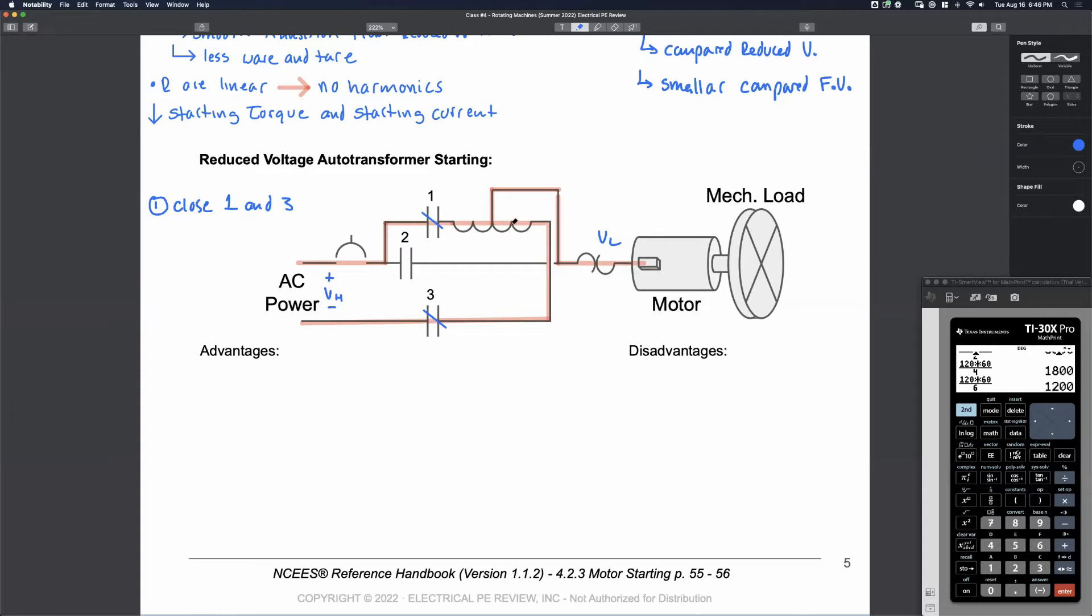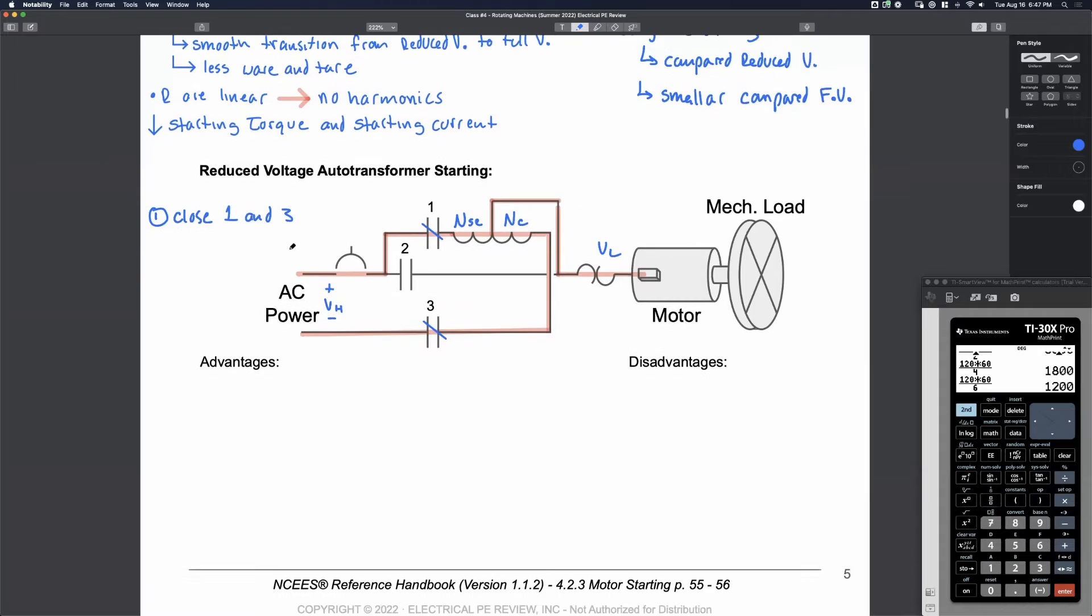What winding is this right here? Is this the common winding or the series winding? Is this common or series? Series. Who said series? Careful, Mason. Yeah, it's common. We'll call this N sub C. It's common on both sides of the motor or rather both sides of the auto transformer. And here's NSE. Here's our series winding.